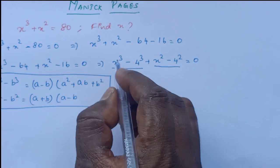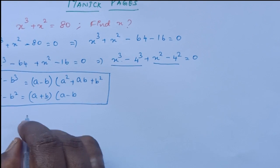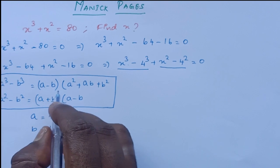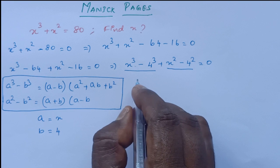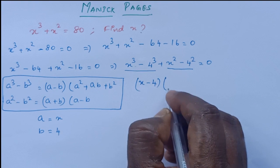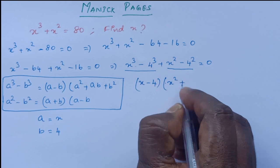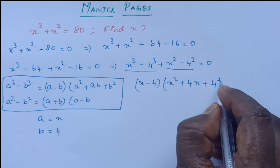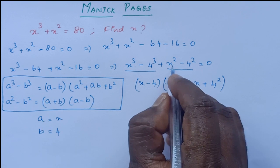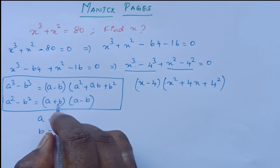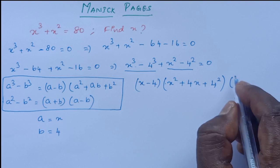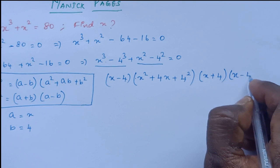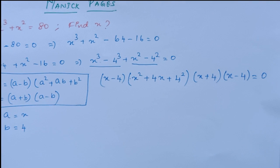By applying these formulas here, a is equal to x and b is equal to 4. When I apply the first formula, it is x minus 4 into x square plus 4x plus b square, which is 4 square. For x square minus 4 square, using a plus b into a minus b, we get x plus 4 into x minus 4 equal to 0.